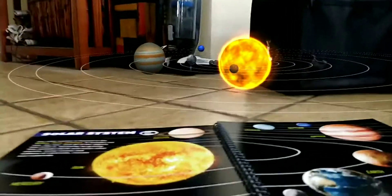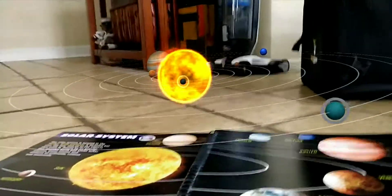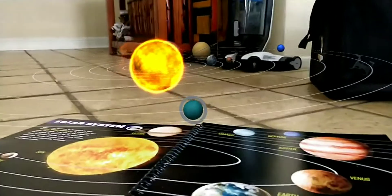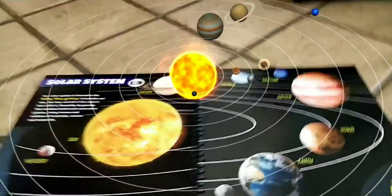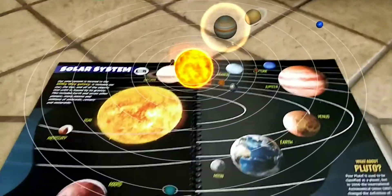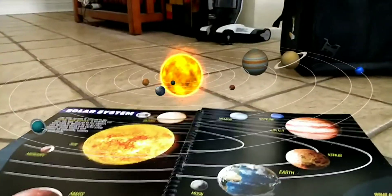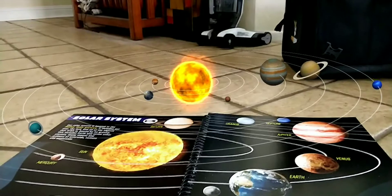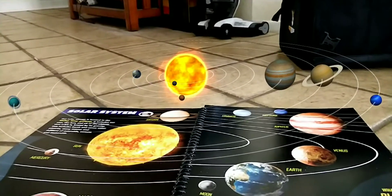From the closest planet to the sun, in order, we see Mercury, Venus, Earth, Mars, Jupiter, Saturn, Uranus, and Neptune. Watch as each planet rotates within our galaxy.